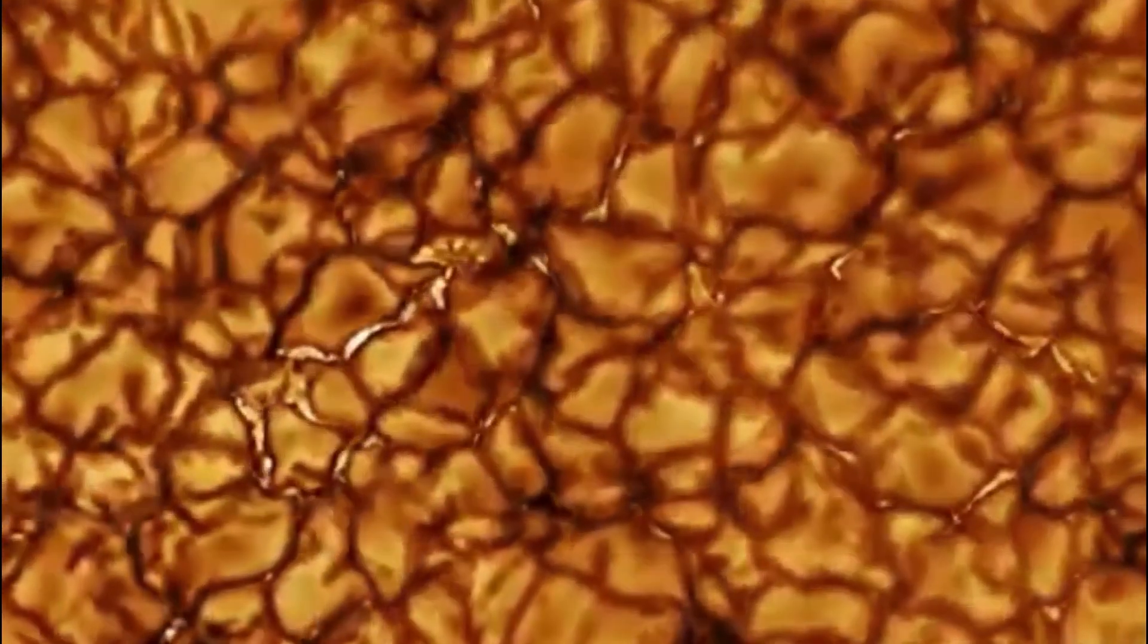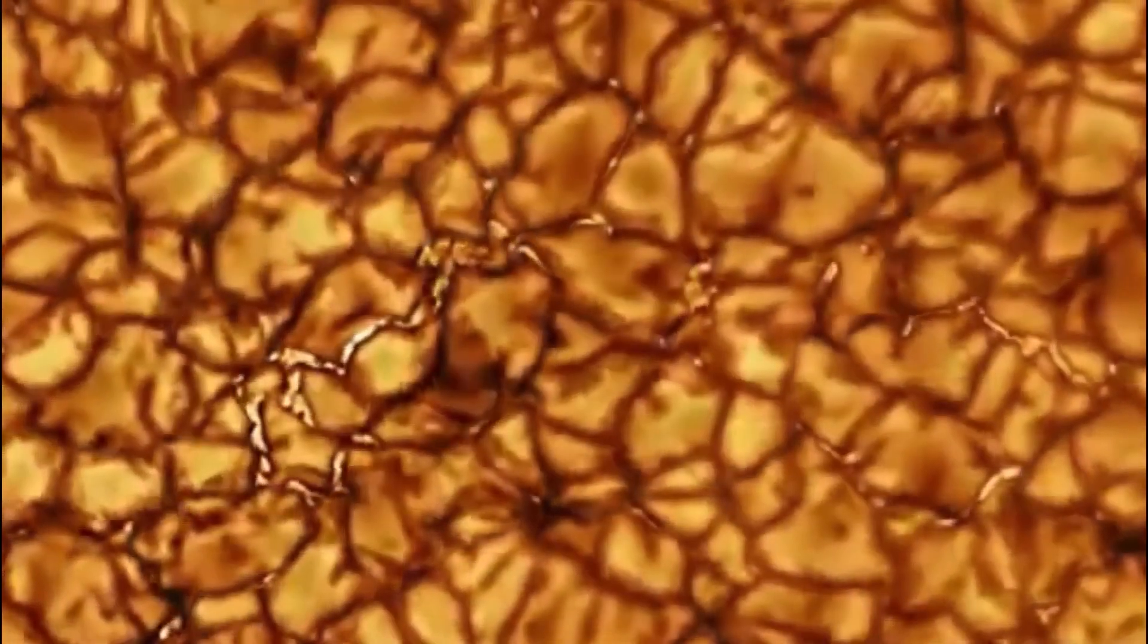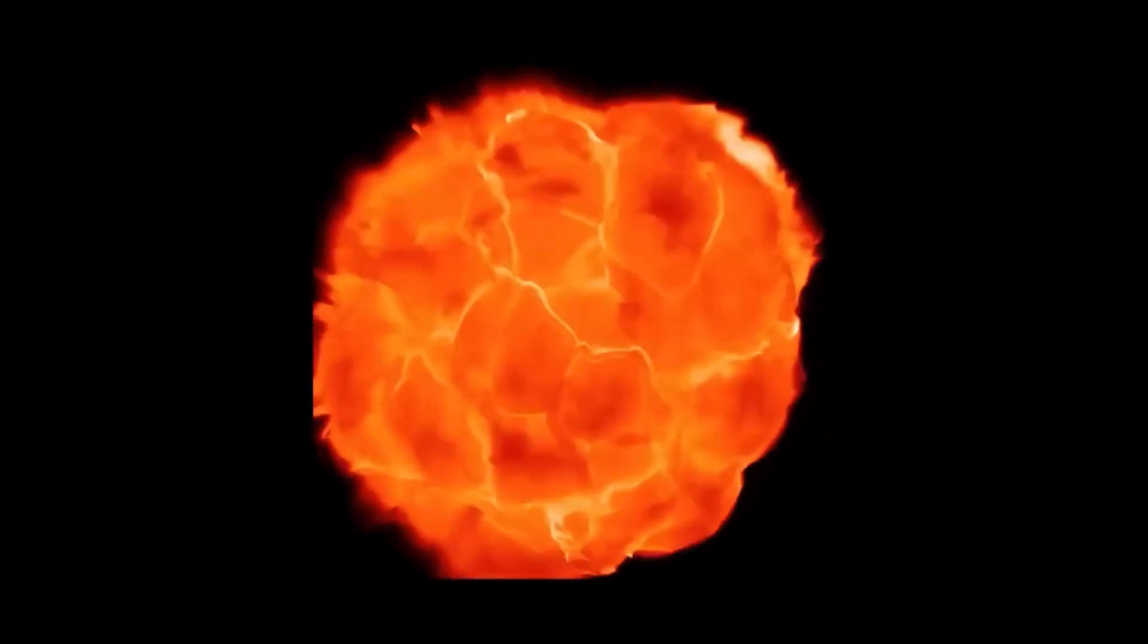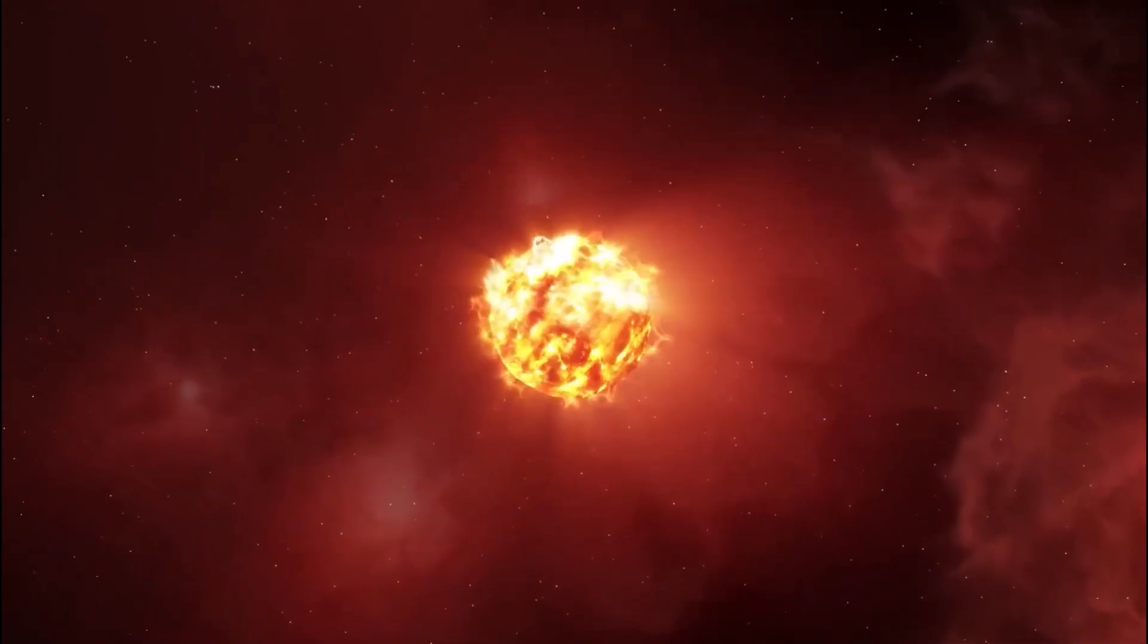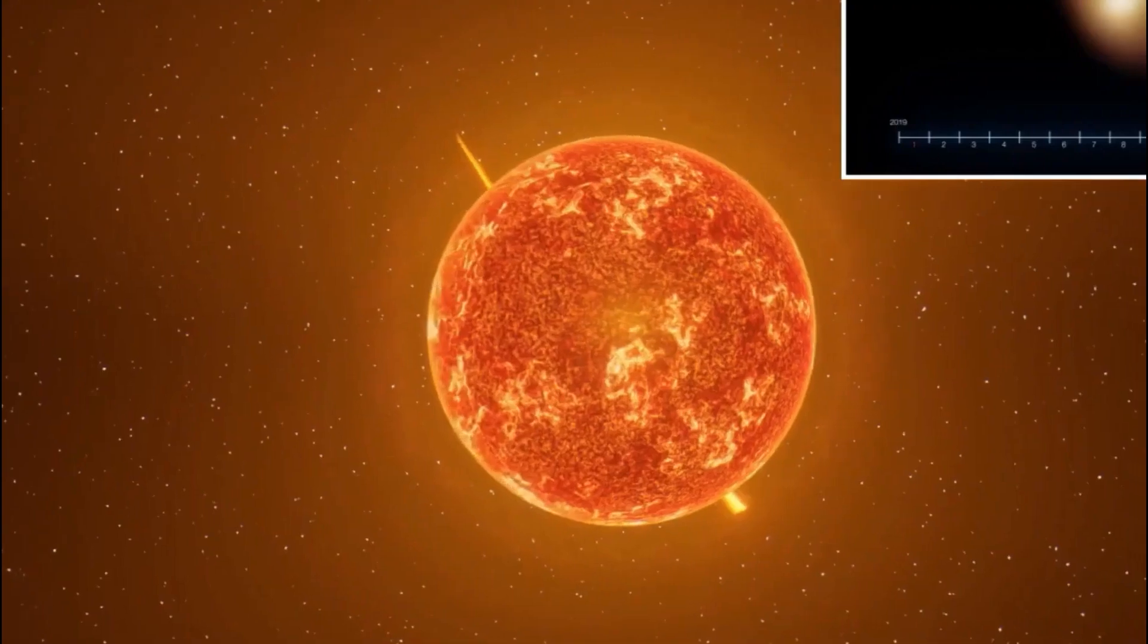Instead, what astronomers have been seeing is even weirder. Betelgeuse's brightness has fluctuated erratically, and its surface has been bubbling and shifting in ways we've never seen before.